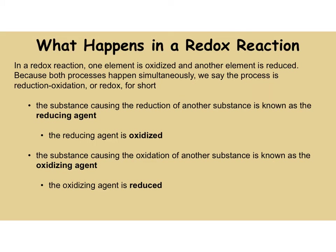In a redox reaction, one element gets oxidized and another element gets reduced. The electrons have to go from one element to the other because both processes happen simultaneously. The substance that caused the reduction is called the reducing agent — it caused something to gain electrons, so it lost electrons and got oxidized. The substance that caused an oxidation is called the oxidizing agent — it had to gain electrons so that something else could lose electrons, so the oxidizing agent is reduced.